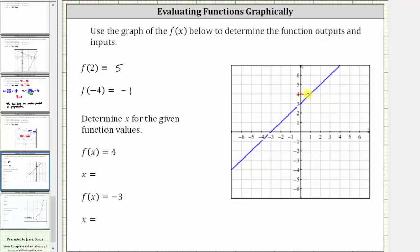So we move to the right. This is the point on the graph where the function value or y value is four. Notice the x value or input is positive one. Because this ordered pair is one comma four, this tells us when the function value or y value is four, the input or x value is one. So if f of x equals four, x equals one.